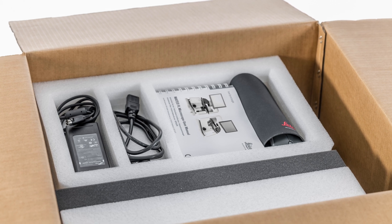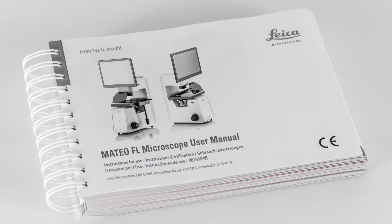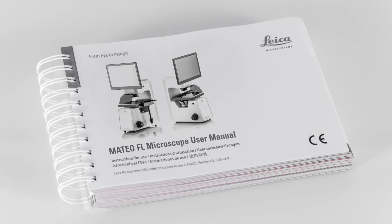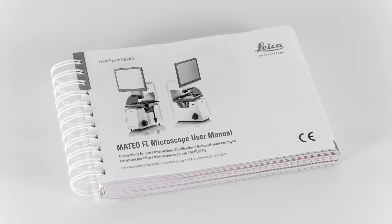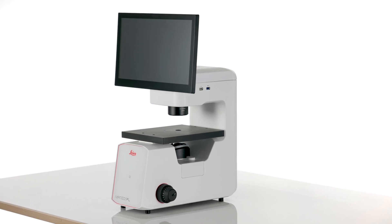The contents of the box may vary according to the components you purchased. The top tray contains the user manual and an inventory list. Underneath the top tray is the body of your Mateo FL Microscope.